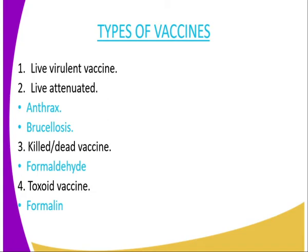The second type is live attenuated vaccine, where the disease-causing microorganism is mixed with certain chemicals to reduce its power so that it will not affect the animal. Examples of diseases controlled using this type of vaccine include anthrax and brucellosis.